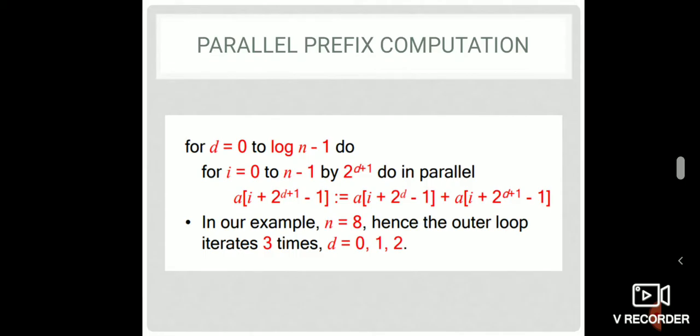It is easy to use. If you use a leaf node or a particular subtree, we will add a little bit of complexity. We will divide the binary tree into a subtree. If you use valines as a subtree, we can use the computation, easy to use. In the algorithm, D is equal to 0 to log n-1.